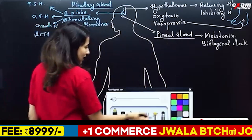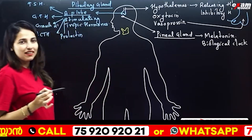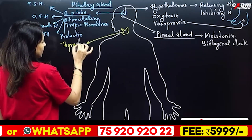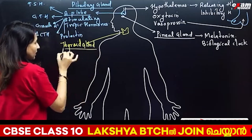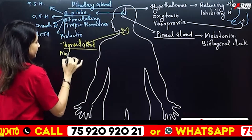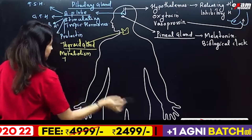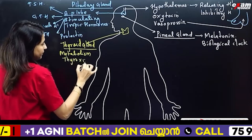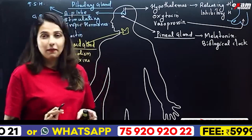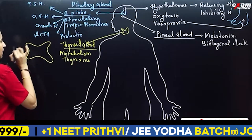Then we come to the Thyroid Gland — also called the Butterfly Gland. The thyroid gland controls whole body metabolism. We don't have metabolic activities without it — metabolism is its main function. This hormone is thyroxin. A deficiency leads to goiter. In our CBC class, we will talk more about the thyroid gland.